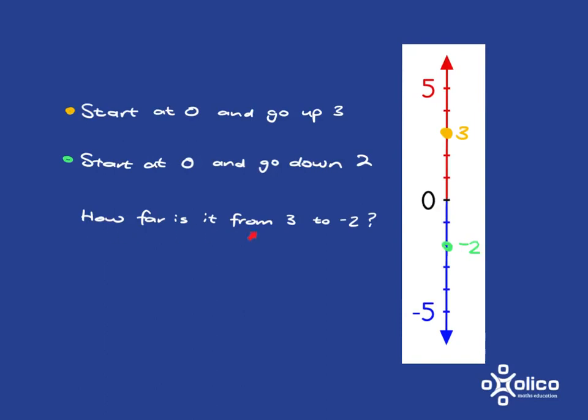So how far is it from 3 to minus 2? Well, we can go and count 1, 2, 3, 4, 5 steps. But also, we could be a bit smarter and say, look at what we've been using already up until now and see that from 3 to 0, that's 3 steps,